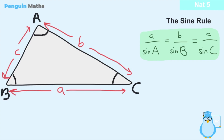The sine rule reads: a divided by sine of angle A, equals b divided by sine of angle B, which also equals c divided by sine of angle C. Essentially, the sine rule is a ratio between one of the side lengths and its paired angle — and the rule states that if we go through each of the sides and each of its paired angles, all of these ratios are equal.